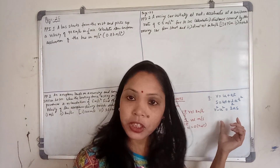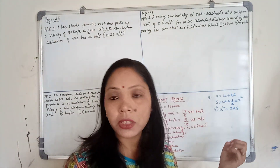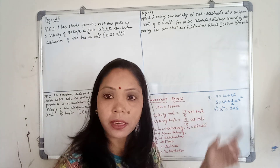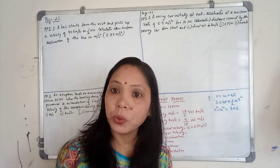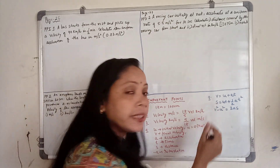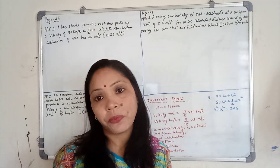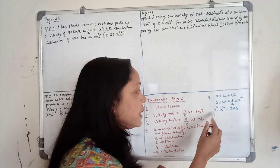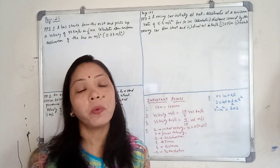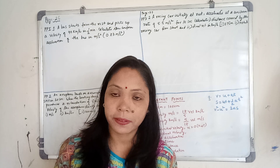The equations of motion we need are: first, V equals U plus AT; second, S equals UT plus half AT squared; and third, V squared minus U squared equals 2AS.